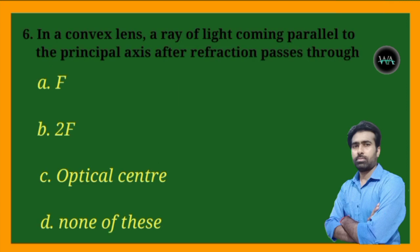Next question: in a convex lens, a ray of light coming parallel to the principal axis after refraction passes through — f, 2f, optical center, or none of these?